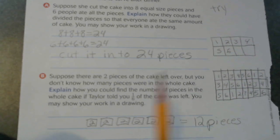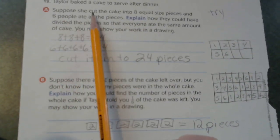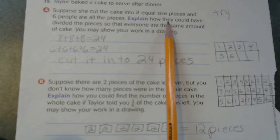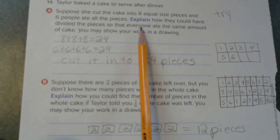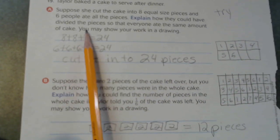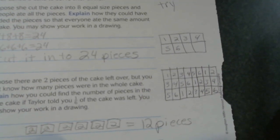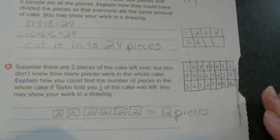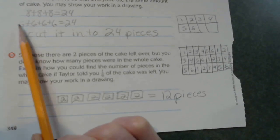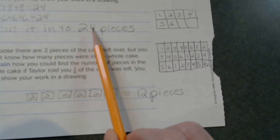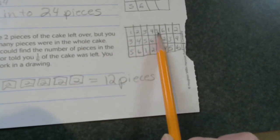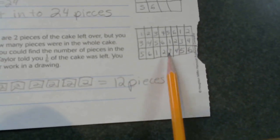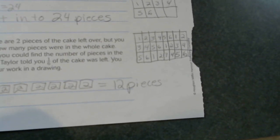Number 19 is a part A and a part B. It says Taylor baked a cake to serve after dinner. Suppose she cut the cake into eight equal size pieces and six people ate all the pieces. Explain how they could have divided the pieces so that everyone ate the same amount of cake. Well, I first drew my picture of it broken up into eight. Two pieces would be left. So in order to make sure that everyone gets the equal amount, you have to have a number that both eight and six go into. So I broke it up into 24 pieces. And as you can see here, I numbered one through six repeatedly for each person, because six goes into 24.